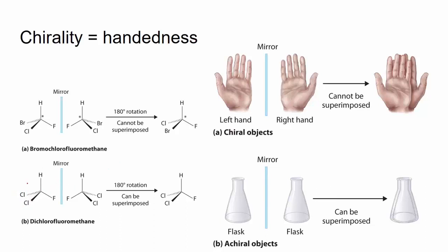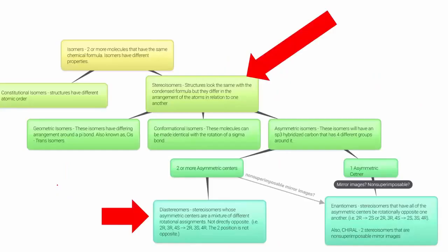Continuing with stereoisomers — what if we have more than one asymmetric center? We can have a special case called diastereomers when you have more than one asymmetric center. A diastereomer is a stereoisomer that is not a mirror image of the other.